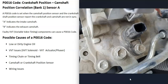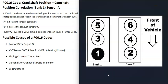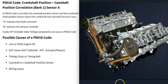When you get a P0016 code, the camshaft position sensor A on bank one is reporting a problem where the crankshaft is not matching up with that camshaft. If you have a V6 or V8 engine, bank one is always the side of the engine with the number one cylinder — google which cylinder that is for your specific engine. The opposite side is bank two. If you have a four-cylinder engine, there will only be one bank.